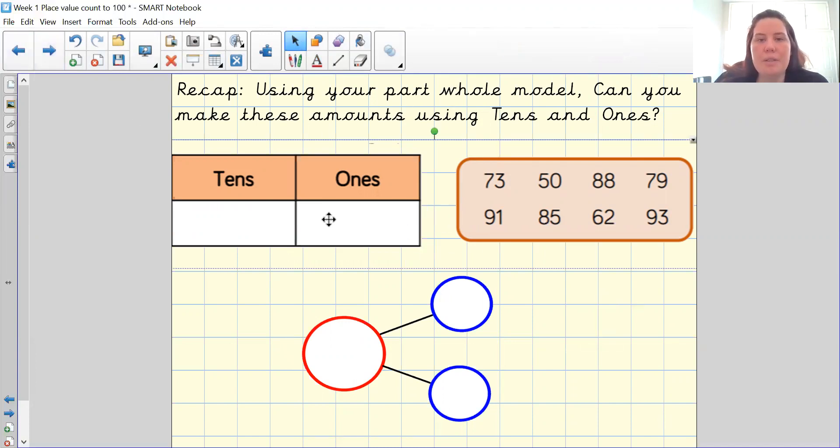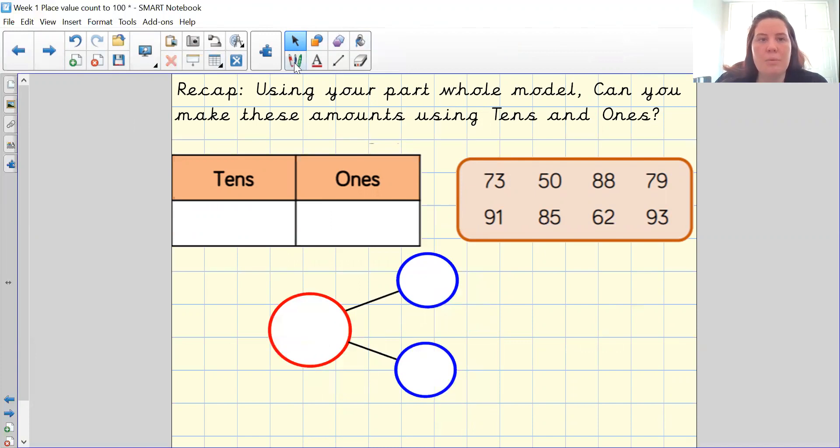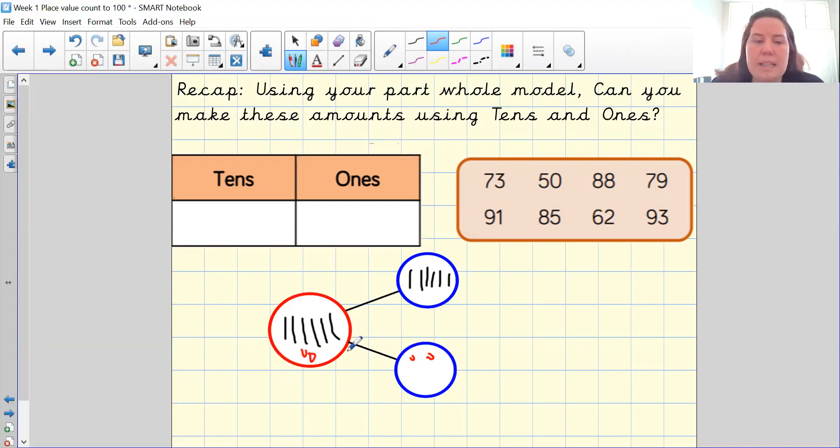So all you're going to do is using your grid you will use your tens and ones to represent it. So if I was to make a 62 I'm going to put six ones in, one, two, three, four, five, six and I'm going to put six in my part here. So you're going to use objects, it's quite tricky for me, and then I'm going to do my ones which was two. One, two, and I'm going to put them in, one, two.